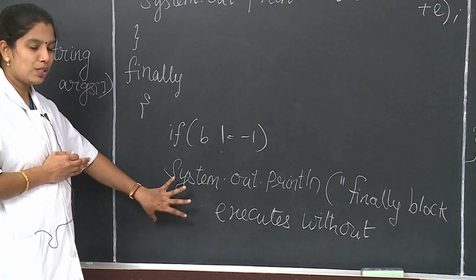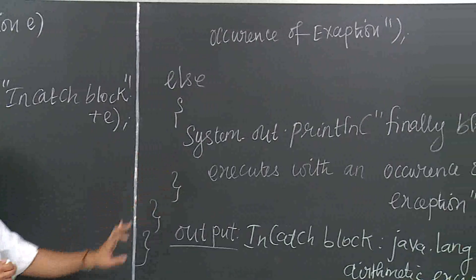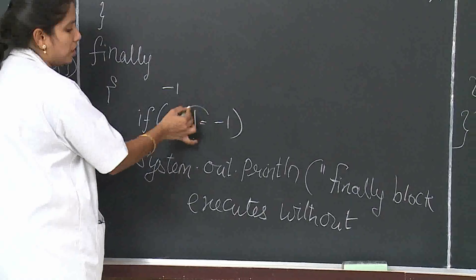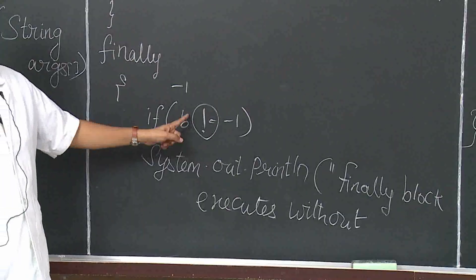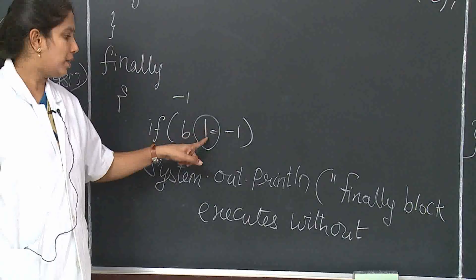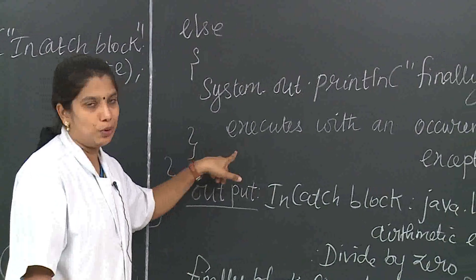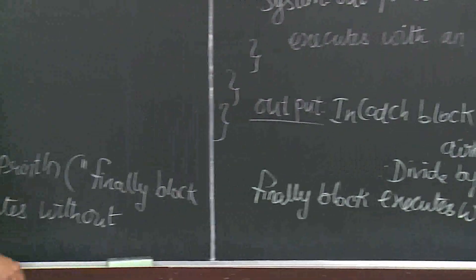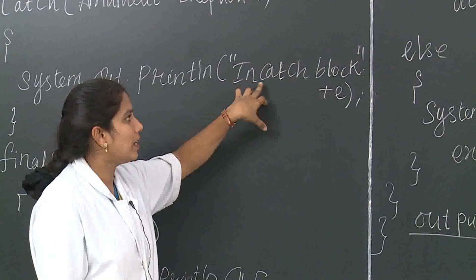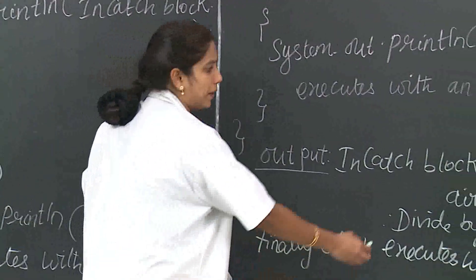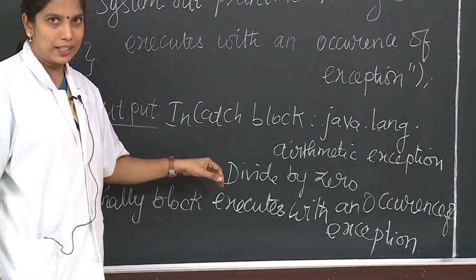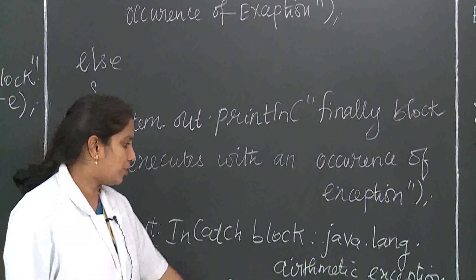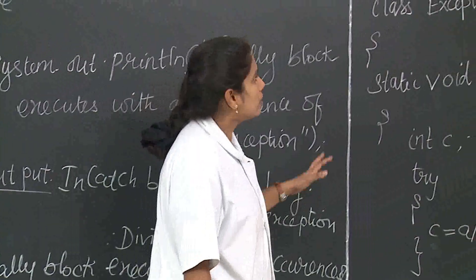Since b is already assigned -1, the condition b != -1 is false, so the else block executes, printing 'finally block executes with an occurrence of exception'. The output shows: first the exception in the catch block — java.lang.ArithmeticException: divide by 0 — then the finally block executes printing its message.